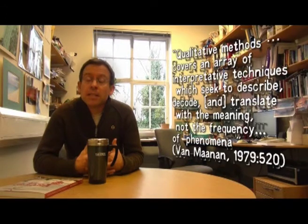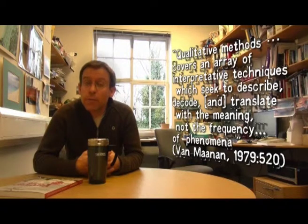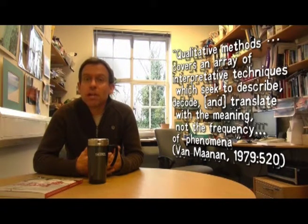In order to get more of a human's eye view rather than a bird's eye view, social researchers choose to use qualitative methods. As Van Manen describes, qualitative methods is an umbrella term covering an array of interpretive techniques which seek to describe, decode, translate and otherwise come to terms with the meaning rather than the frequency of certain more or less naturally occurring phenomena in the social world.